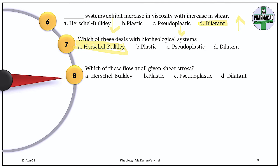Question 8. Which of these flow at all given shear stress? This can have multiple answers. Pseudo-plastic and dilatant will flow at all shear stress. Plastic and Herschel-Bulkley require a yield value — only after attaining that shear stress will they start flowing; if the stress value is less than that yield value, they won't flow. But pseudo-plastic and dilatant will flow at every shear stress — their viscosity will either decrease or increase as you increase the shear stress, but they will flow.